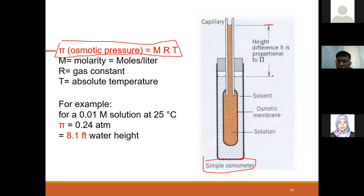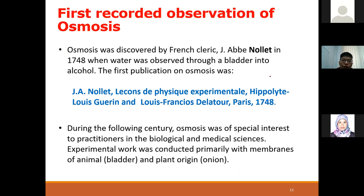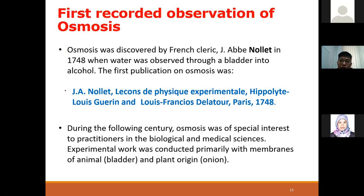In the osmometer, the height of the solution column can be used to calculate osmotic pressure. Let's say you put sea water inside with solvent on the other side - the height difference indicates the osmotic pressure. One of the earliest recorded observations of osmosis was by a French scientist who discovered that osmosis occurs through a bladder into alcohol - published in research almost 300-400 years old.